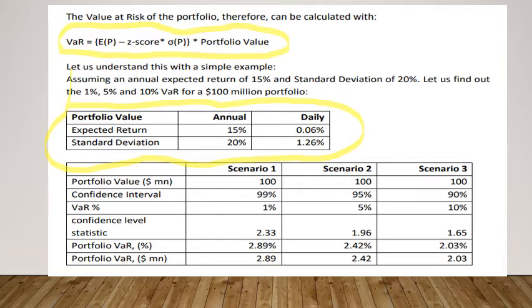The expected return data is given in terms of annual percentage, as is the standard deviation data. Now if you have to work on one-day VaR, you have to convert the expected return from annual to daily — both for standard deviation and expected return. Then you have to identify the applicable confidence interval. Here the confidence interval is 99% and the confidence interval statistic is 2.33. Using this data, we can reach a portfolio VaR of 2.89, which represents the expected loss on the portfolio value of 100 million.